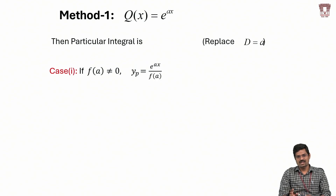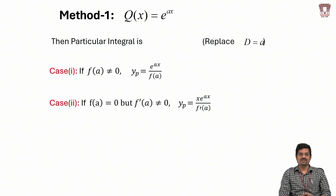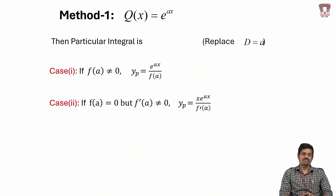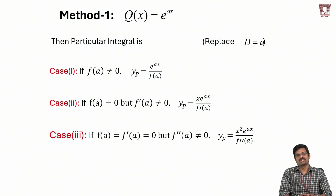The denominator f(a) defines yp only when f(a) is non-zero — that is why that condition is required. If f(a) is zero, we go to Case 2: differentiate f(D) with respect to D once to get f'(D), then replace D with a. If f'(a) is non-zero, then yp = x·e^(ax) / f'(a). If both f(a) and f'(a) are zero, we go to Case 3: if f''(a) is non-zero, then yp = x²·e^(ax) / f''(a). This pattern continues for higher derivatives.